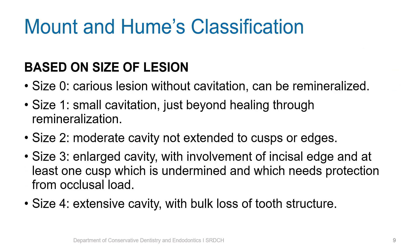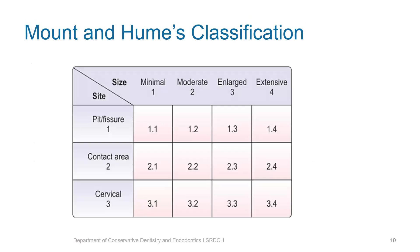Size 2 is a moderate cavity which has not extended to cusps or edges. Size 3 is an enlarged cavity with involvement of the incisal edge and at least one cusp which is undermined, requiring protection from occlusal loading. Size 4 is an extensive cavity with bulk loss of tooth structure. Based on the site and size, the rows represent site — pits and fissures, contact area, and cervical region — and the columns represent the size of the lesion: minimal, moderate, enlarged, and extensive. Based on that, the caries can be classified as 1.1, 2.2, etc.